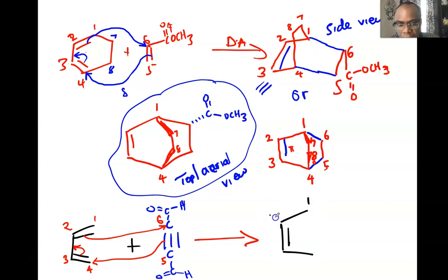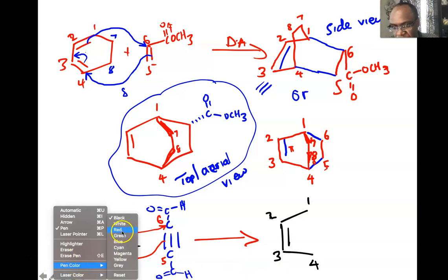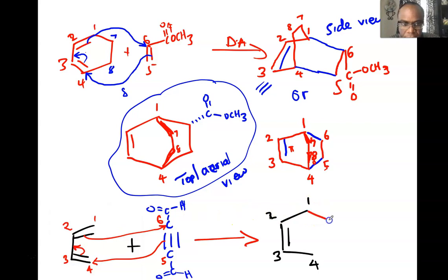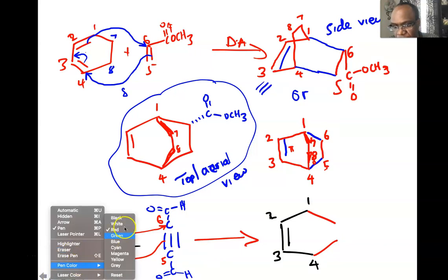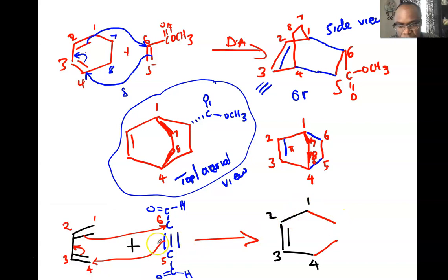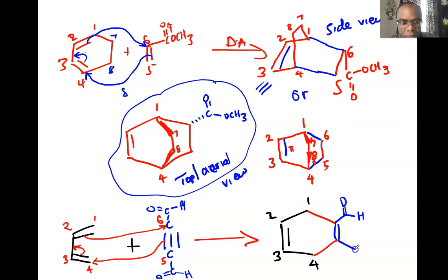Drawing the product: carbons one through four from the diene are connected by new sigma bonds shown in red between one-six and four-five. Using the triple bond as dienophile means one pi bond was consumed; the remaining bond between carbons five and six has one sigma bond and one remaining pi bond, leaving a double bond in the ring. The aldehyde group is on the plane — no need to show stereochemistry because sp2 carbons are trigonal planar.